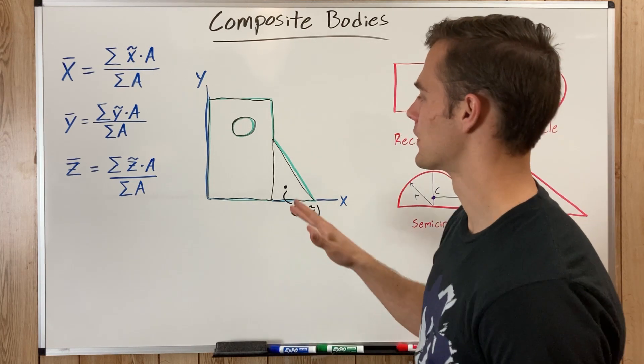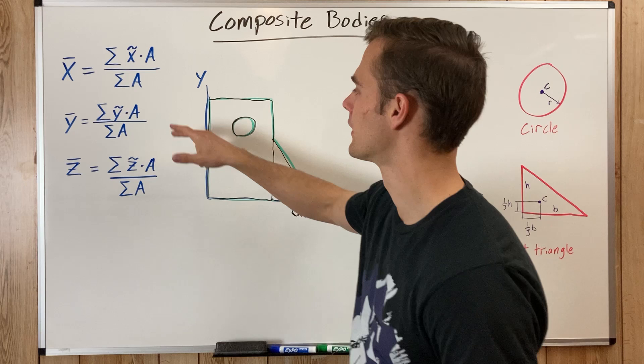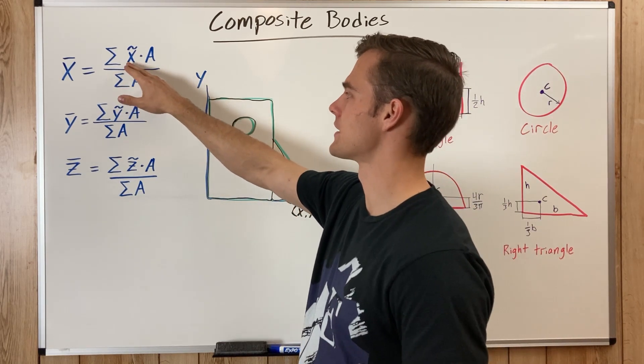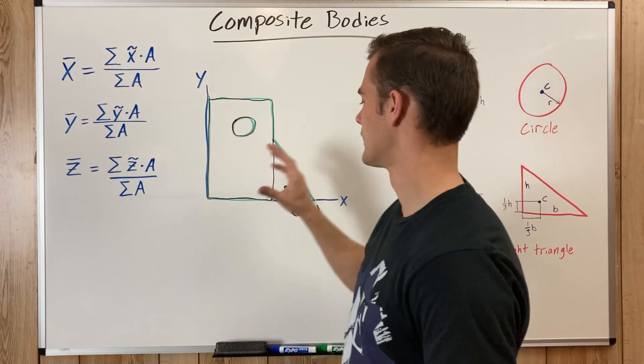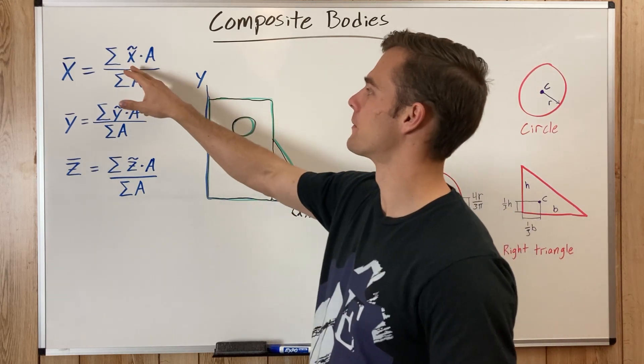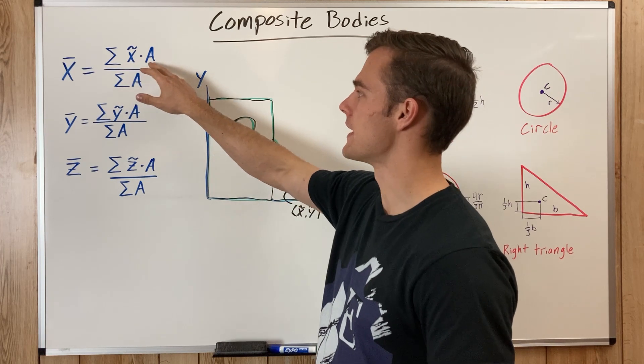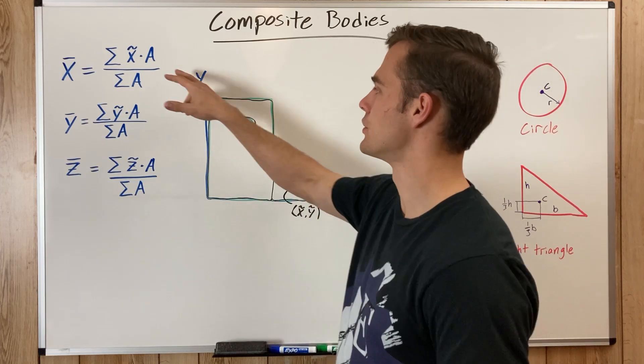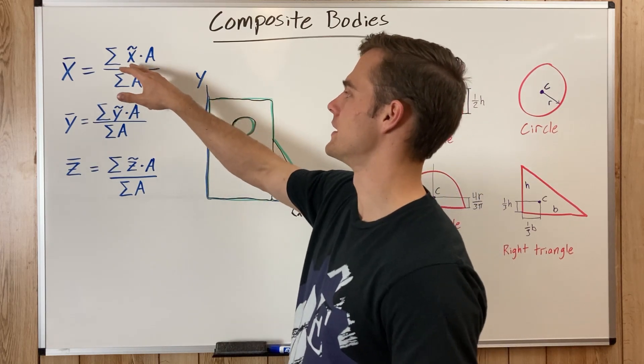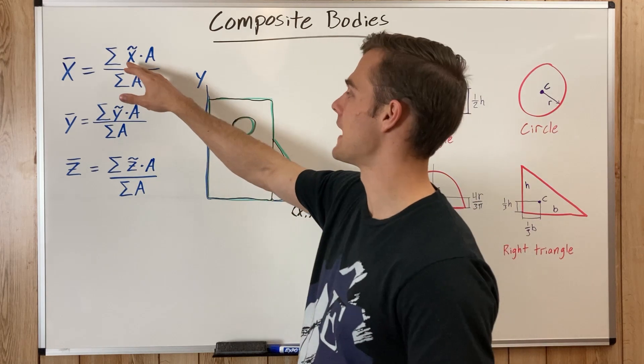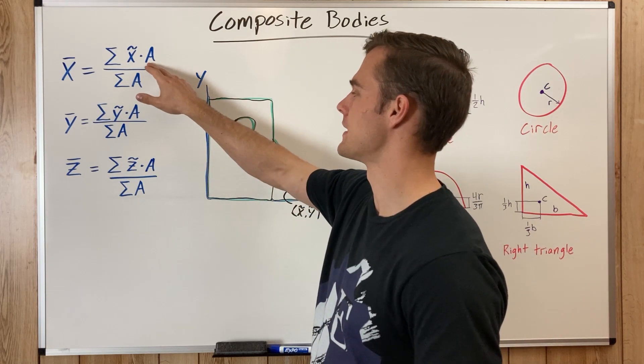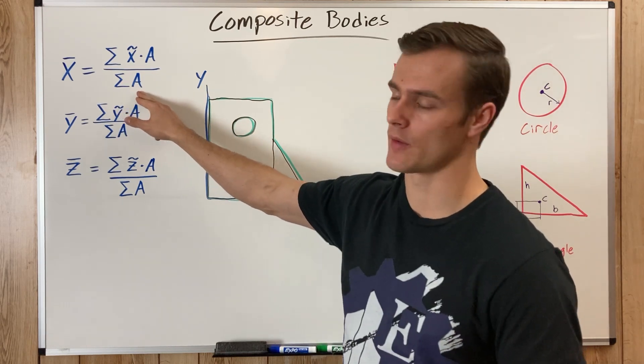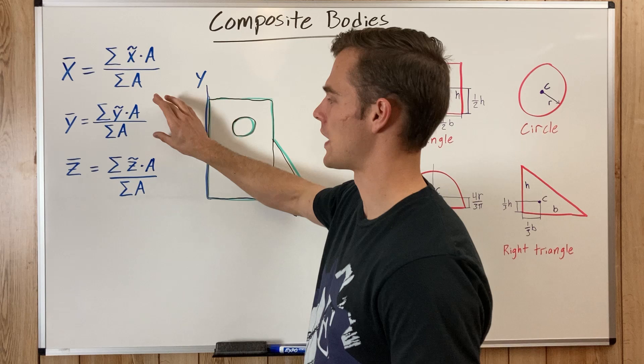And then from there, with the fifth step, we can plug them into these equations, where for x bar, it's going to be the center mass of the smaller component part of the object, multiplied by the area of that component part, and then added to all the rest of the centers of mass, x centers of mass, times by the areas of those shapes, all added together, and then divided by the sum of all the areas. And then it's pretty much the same with y bar.